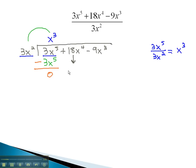We can now bring down the next term, 18x to the 4th, and repeat the process. Now we're gonna divide the 18x to the 4th by the 3x squared, and we can see this will reduce to 6x squared.